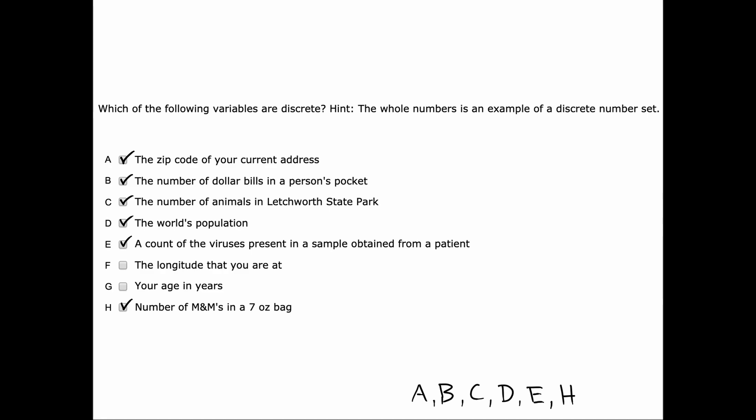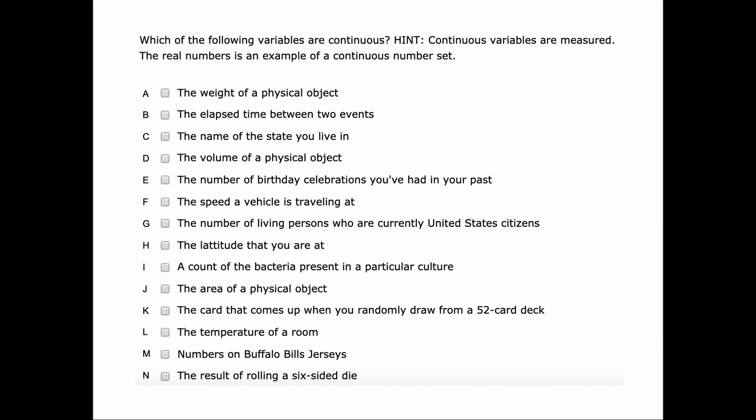Here's what I chose. The zip code of your current address is discrete. Fractions wouldn't make sense to the concept. I chose B. The number of dollar bills in a person's pocket is discrete. I chose C because an animal either exists or it doesn't. I chose D. The world's population is discrete. Fractions of a person don't make sense. I chose E. A count of the viruses present in a sample obtained from a patient. Half of a virus wouldn't make sense. I chose choice H. A fraction of an M&M wouldn't make sense.